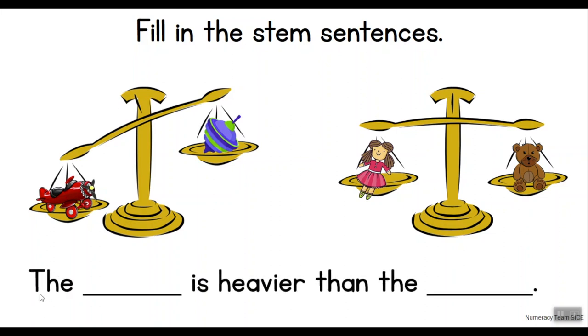Our first sentence reads: The ___ is heavier than the ___. I noticed the word 'heavier,' so here we are comparing the weight of two objects. Hmm, I wonder which pan balance can help me fill in this sentence. Do you remember what happens when something is heavier than another?